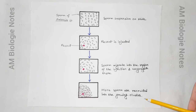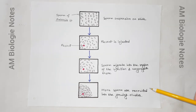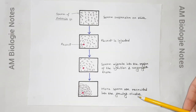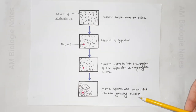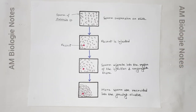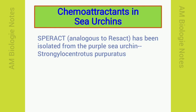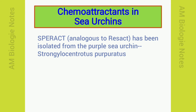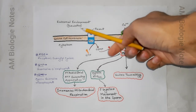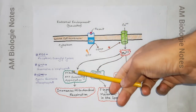In this way, sperm of a particular species can move toward the ovum of the same species. An analogous compound, speract, has been isolated from the purple sea urchin Strongylocentrotus purpuratus. Now we will see the molecular mechanism of how resact acts as a sperm-attracting peptide as well as a sperm-activating peptide.